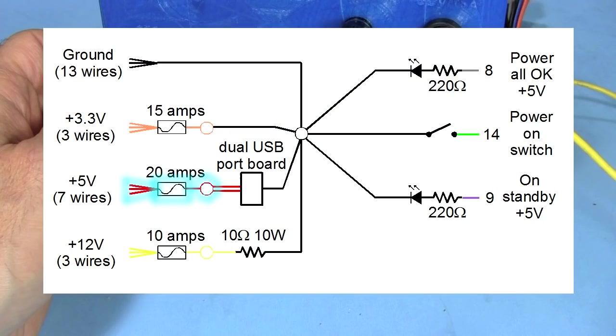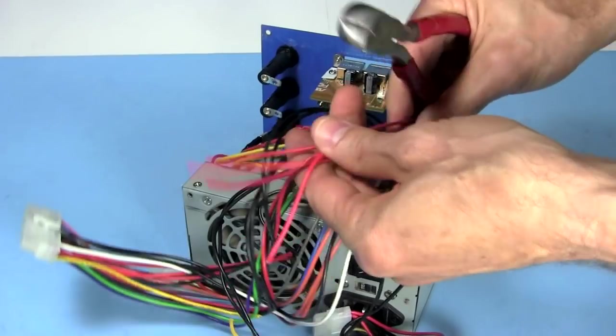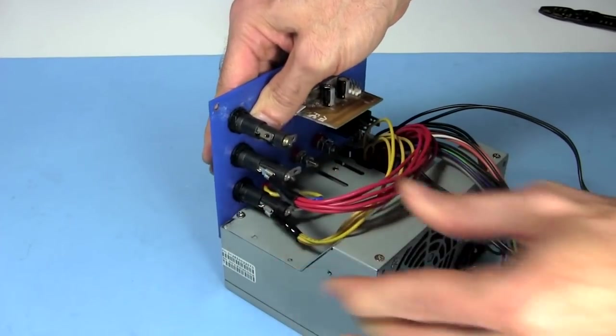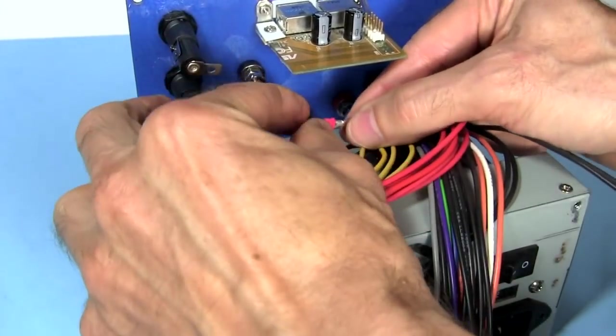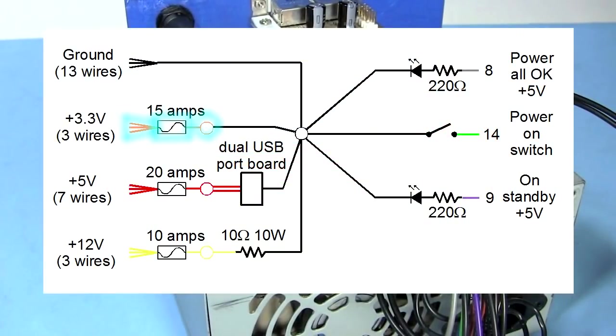Next up from the bottom is the 5 volt fuse and binding post. So I do the same for it collecting all the red wires connecting them to a disconnect and plugging them into the fuse. I then connect the fuse to the bottom middle binding post but I don't put the nut on the binding post yet since the USB will also have to go there.